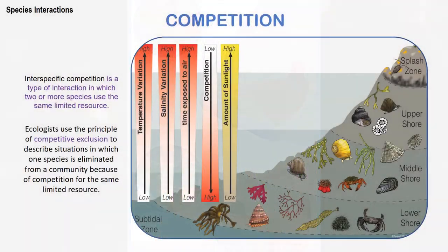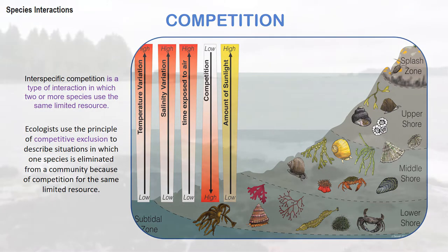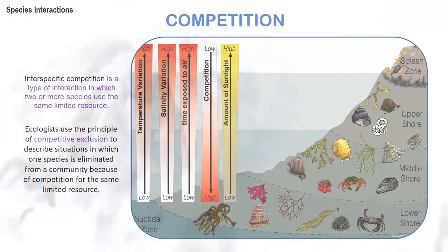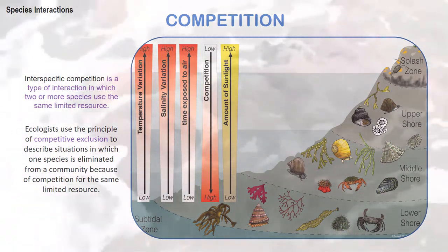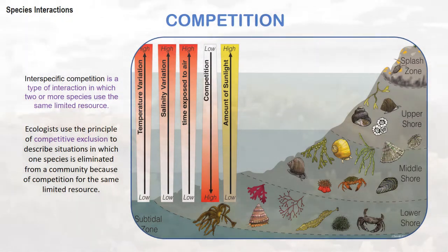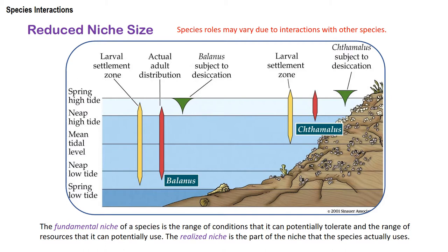Let's look at competition. Interspecific competition is a type of interaction in which two or more species use the same limited resource. Different species in the intertidal zone, for example, can compete for food. More often, one species will use a resource more efficiently than the other, so less of the resource will be available to the competing species. Competitive exclusion may result when one species uses the limited resource more efficiently. To avoid competition, some species try to avoid being near that superior species, which is why you see stratification of various species in the intertidal zone.